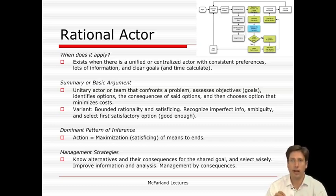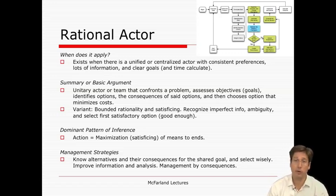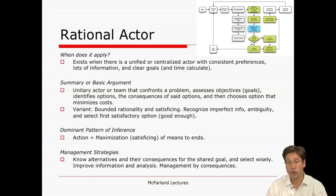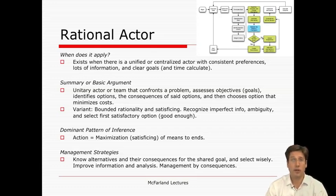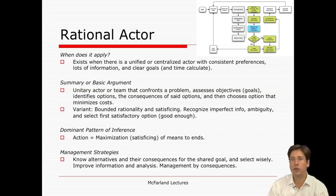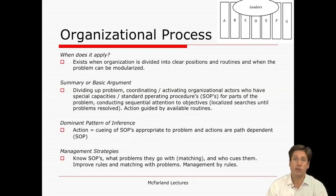It still means ends — except that the boundedly rational actor selects a lower threshold and presupposes imperfect information. The pattern of inference is the means by which action for the organization occurs, and here it is the maximization of means to an end, or satisficing as a means to an end — that's the dominant pattern of inference. As a manager of rational action in your firm, you basically want to focus on knowing the alternatives and their consequences, having clear goals, making sure things are centralized and consistent, and spending a lot of time worrying about the quality of information and analysis you're employing. By doing this, you're more capable of managing by consequences.